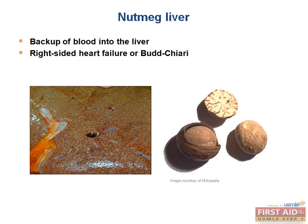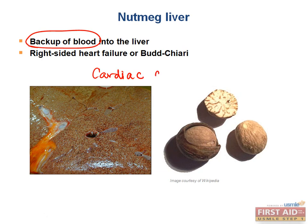Nutmeg liver is caused by a backup of blood into the liver, typically from either right-sided heart failure or Budd-Chiari syndrome — due to post-hepatic backflow. The name comes from the gross appearance of the liver, which some felt looked like a nutmeg. If heart failure is not adequately treated, centrilobular congestion and necrosis may develop and cause cardiac cirrhosis.